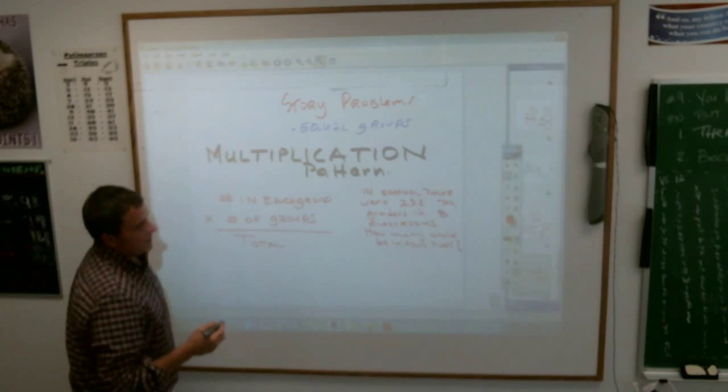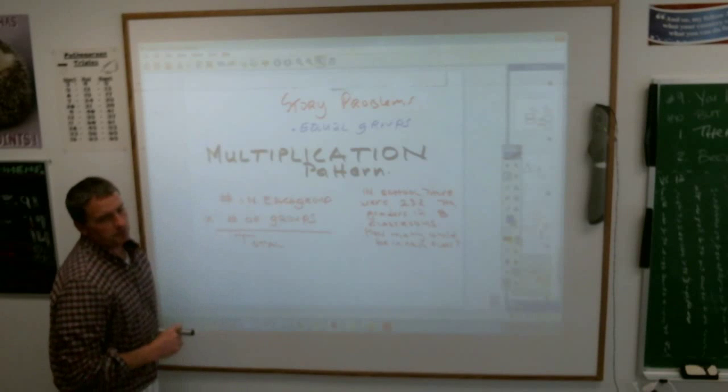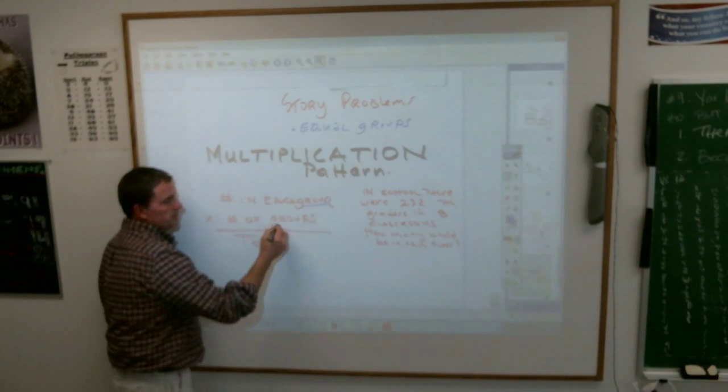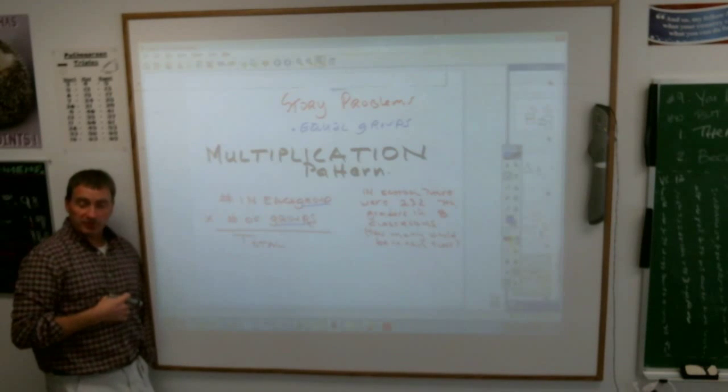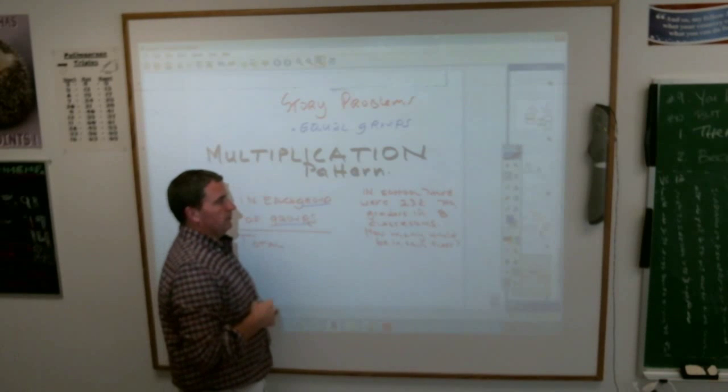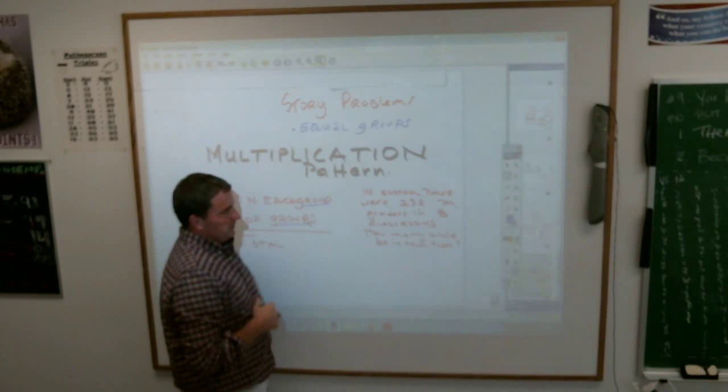Now, the thing, the problem, whatever arises here is, not always in story problems do they use the exact word group. But you have to figure out what word in the story problem is a group of something. So if I'm looking at this thing, in the school, we have 232 seventh graders in eighth grade classrooms. How many should be in each classroom?